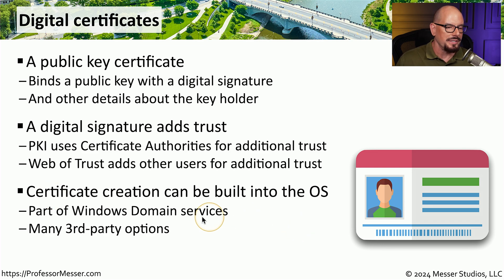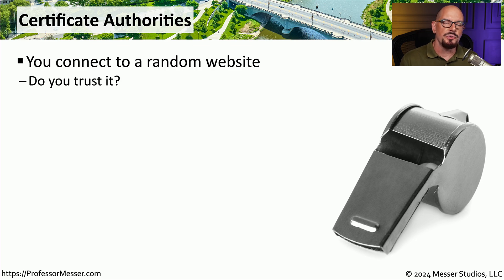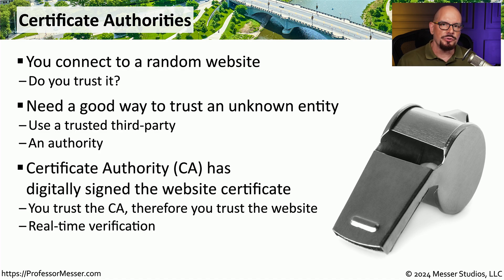For example, the certificate process is built into Windows domain services, but there are many third-party options available for many different operating systems. One of the more common ways to provide trust in an organization is through the use of a certificate authority — a centralized authority that all certificates start from. This means that if anything is signed by this centralized authority, you can trust it anywhere in your organization. Some organizations will build their own certificate authority internally, while others may use a third party as an independent authority. Whether the CA is a trusted internal or third-party resource, it is responsible for the trust we have in all certificates we create. Since the certificate authority is digitally signing all of these certificates, anyone can examine a certificate, see who signed it, and determine if that is a signature they can trust.